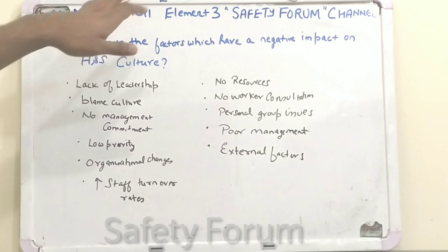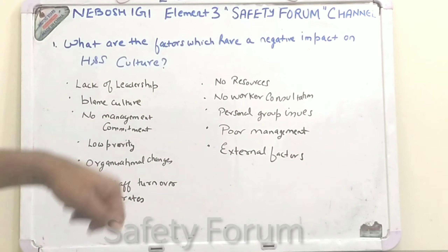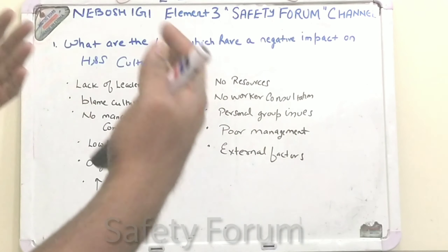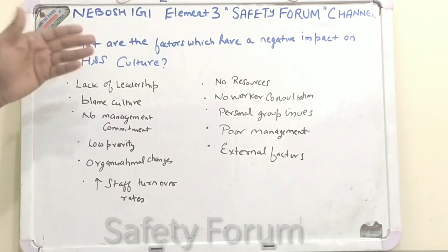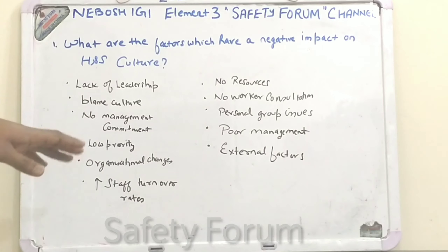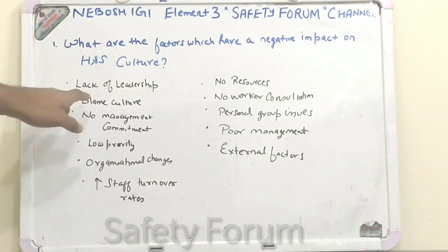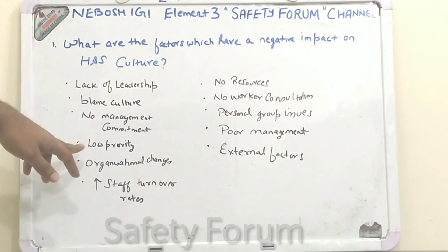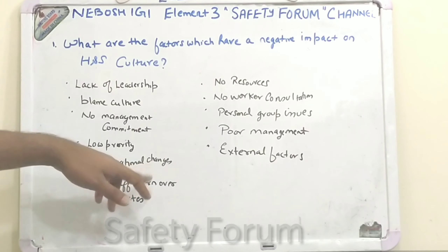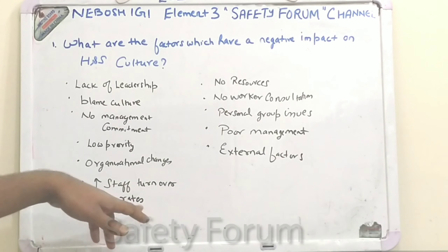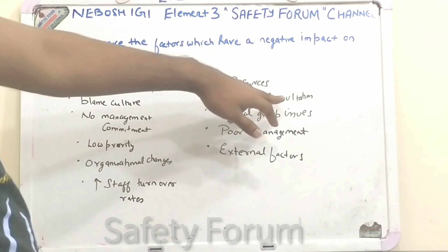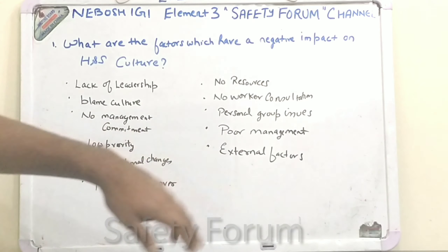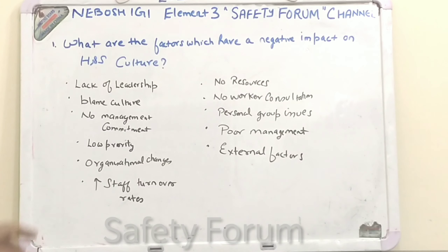Now we will be seeing a question: what are the factors which have a negative impact on health and safety culture? So we have seen what health and safety culture is. The factors include: lack of leadership, blame culture, no management commitment, low priority, organizational changes, increased staff turnover rates, no resources, no worker consultation, personal/group issues, poor management, and external factors.